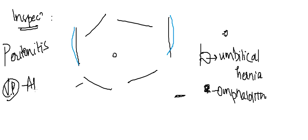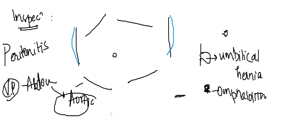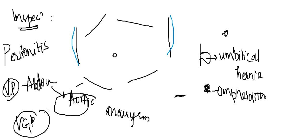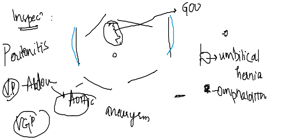You will then have to see visible pulsations — these can be due to aortic aneurysm. You will also look at visible gastric peristalsis, which occurs in the epigastric region and is seen in gastric outlet obstruction. You will also see small bowel peristalsis, which is seen in small bowel obstruction. In either type of obstruction, peristalsis will be visible.